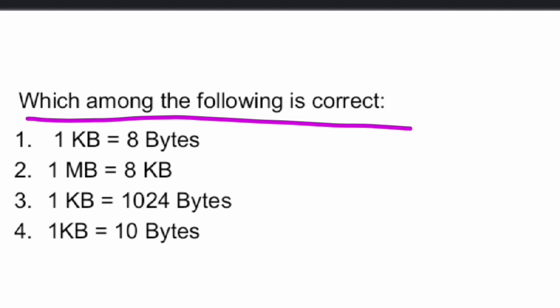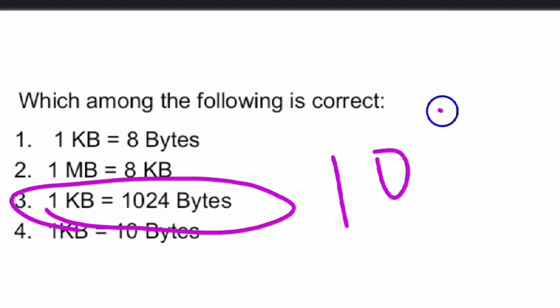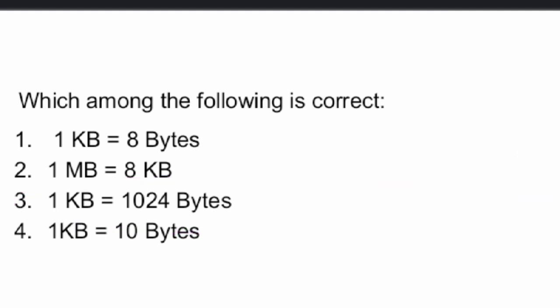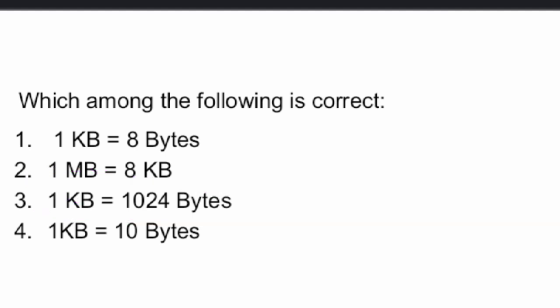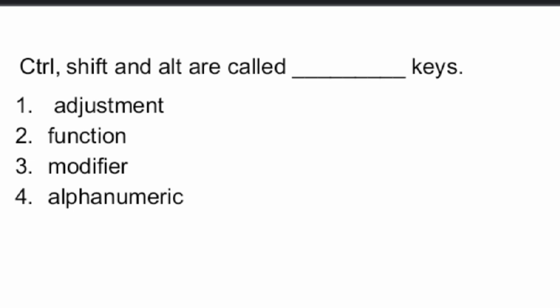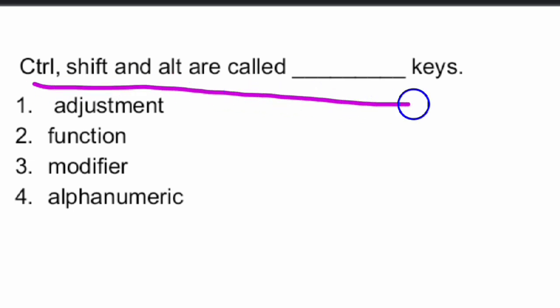Which among the following is correct? One byte equals eight bits, and one kilobyte equals 1024 bytes. Option three is the right answer.